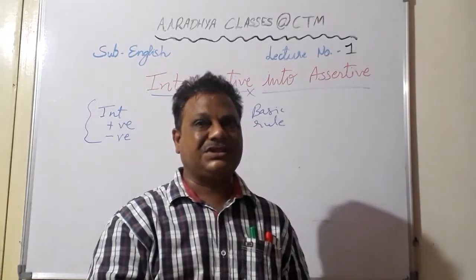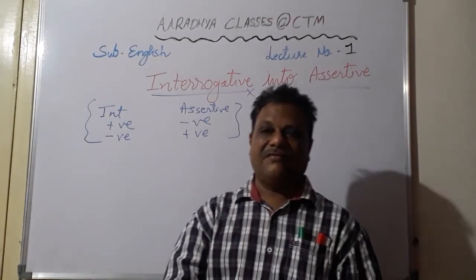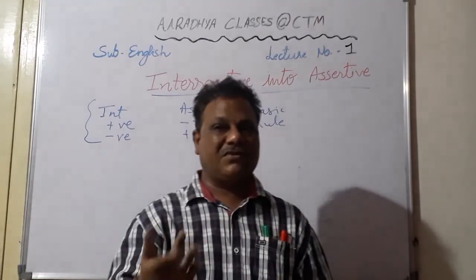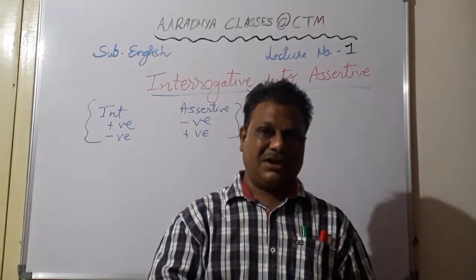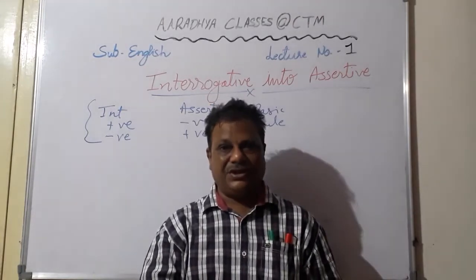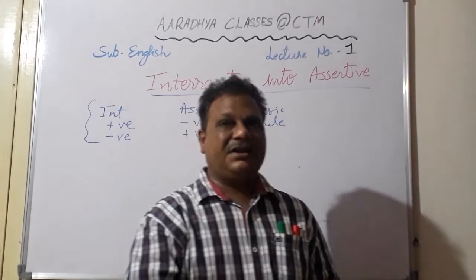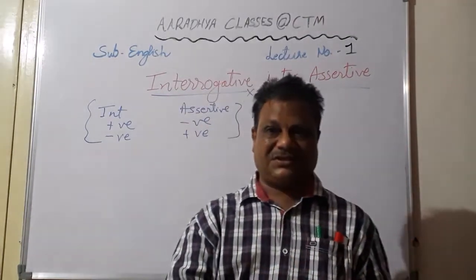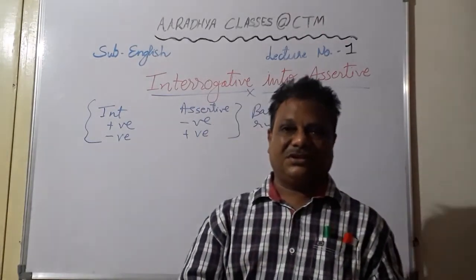Coming to the types of sentences, there are four basic types. One is assertive, second interrogative, third imperative, and fourth exclamatory. An assertive sentence means a statement — it can be positive or negative. For example, 'I teach English,' 'You learn different subjects in school.' Also, 'He doesn't show his interest in any subject' — that is a negative statement. 'He was not present in the meeting' — that is also a negative assertive sentence.